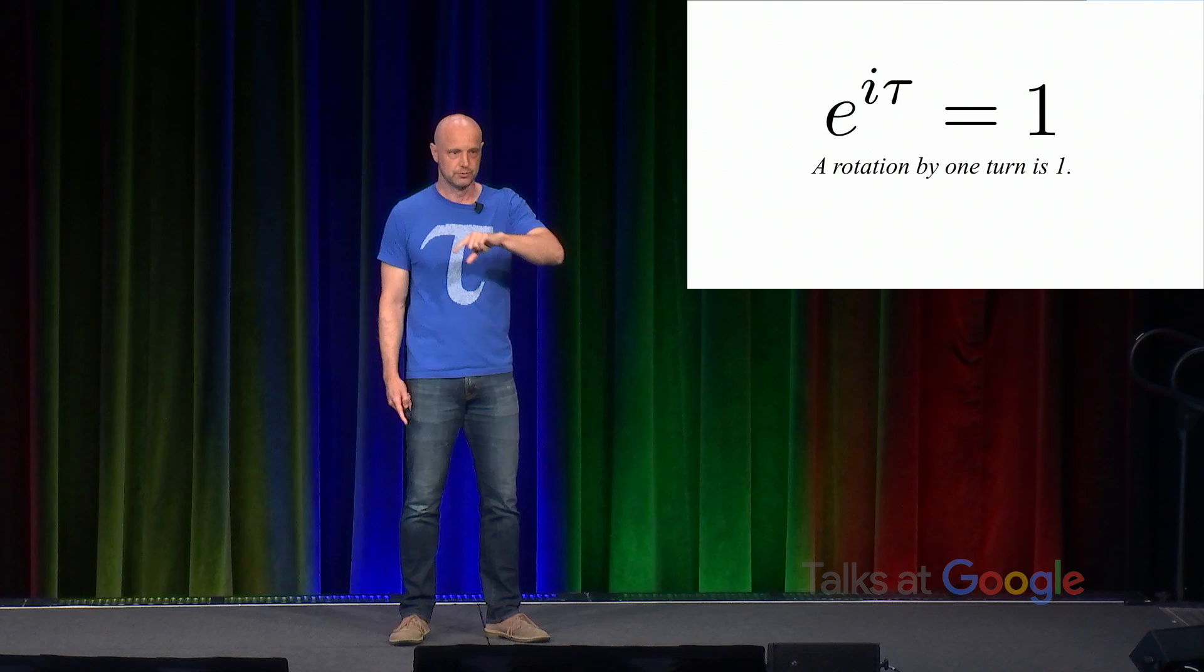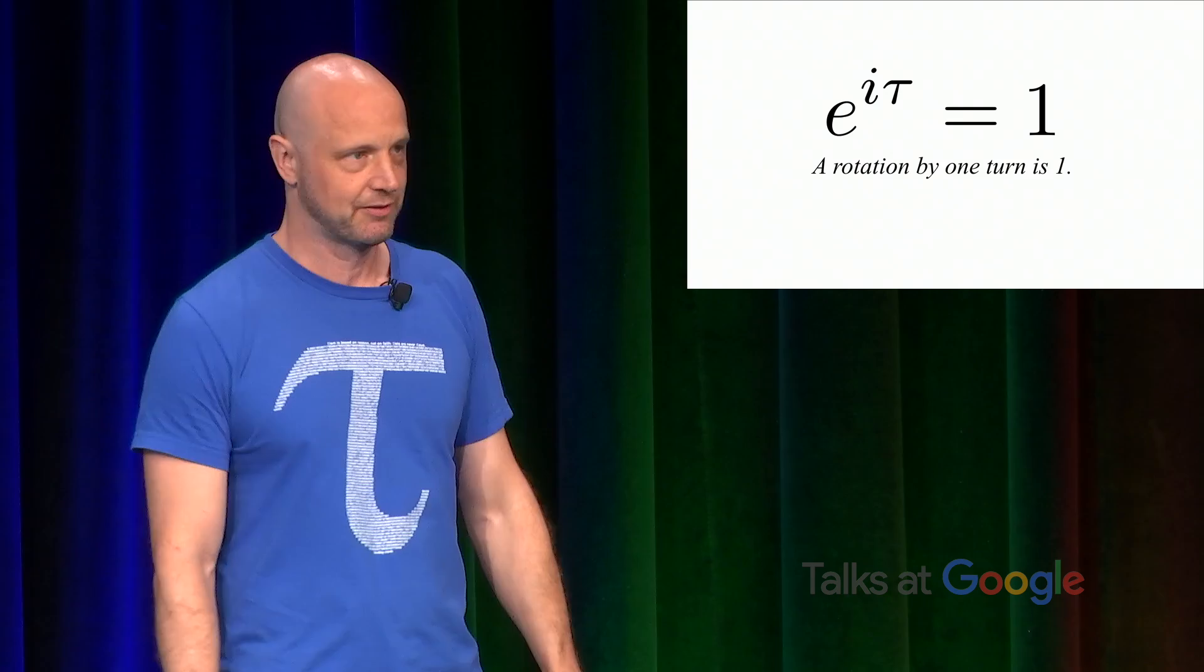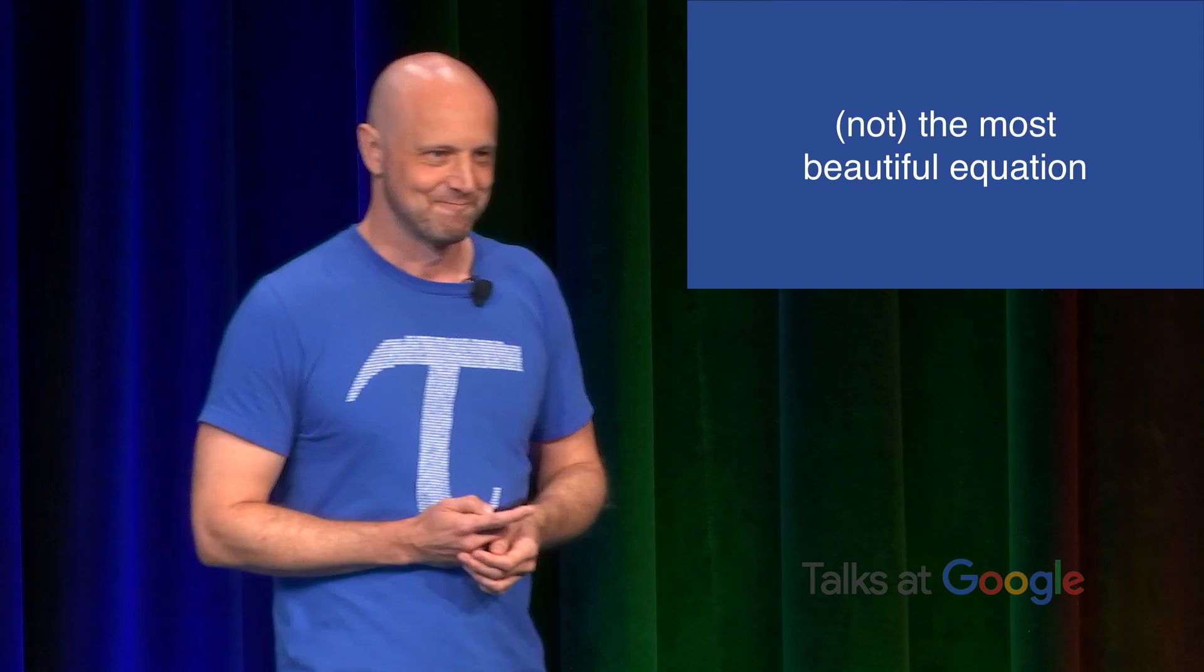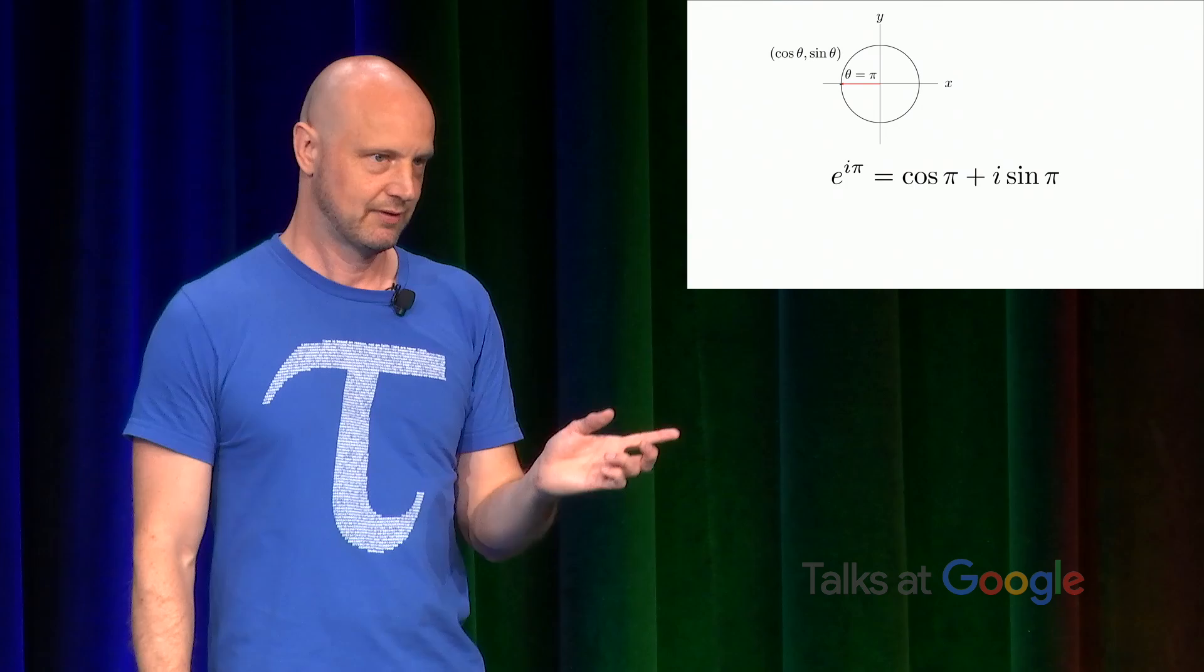So I submit that this is at least a candidate for the most beautiful equation in mathematics, which brings me to what I think is not the most beautiful equation, which is Euler's formula evaluated when theta equals pi. So again, looking at our unit circle, when theta equals halfway around the circle, cosine pi is negative one, sine pi is zero, and we get E to the i pi equals negative one.